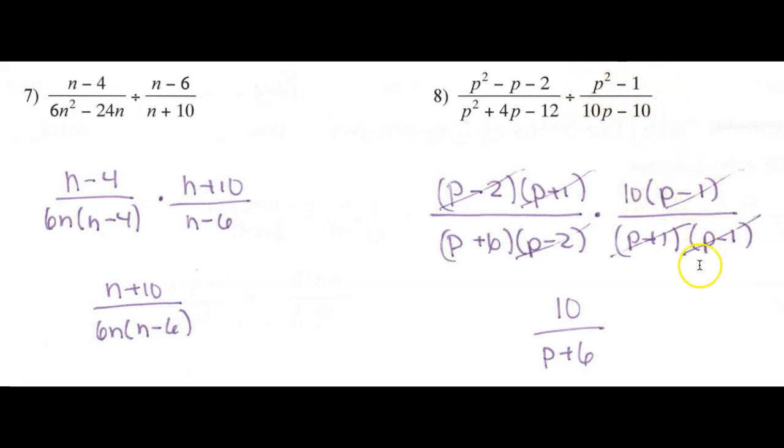And this is going to be a difference of squares in the denominator. So I'm going to get p plus 1, p minus 1. And after all that, I can cancel p minus 1s, p plus 1s, p minus 2s. I'm just going to be left with 10 over p plus 6.